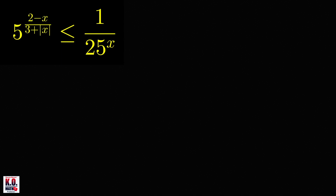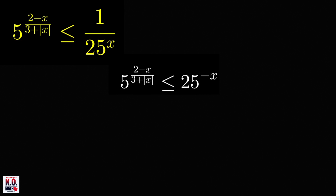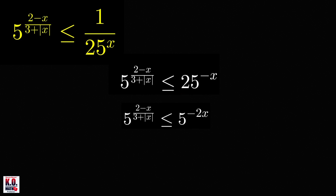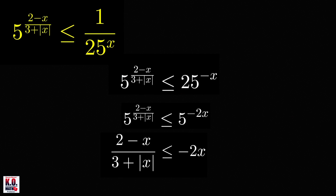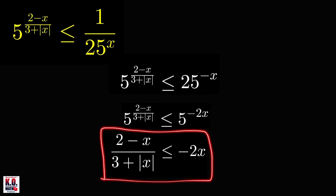First, let us find a rational inequality that is equivalent to this one. Note here that the right-hand side of this inequality can be written as 25 raised to negative x. And because 25 can be written as 5 squared, we can write the right-hand side as 5 raised to negative 2x. And because we know that the exponential function y equals 5 raised to x is an increasing function, this inequality holds if and only if the power of the left-hand side is less than or equal to the power of the right-hand side. So from here, we're going to obtain a rational inequality by considering two cases.